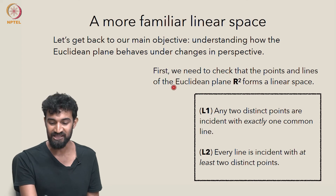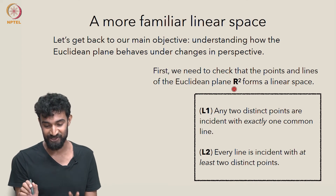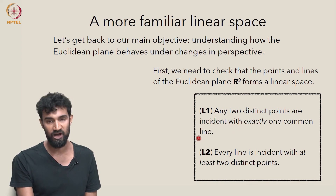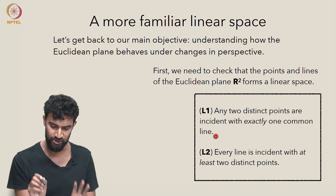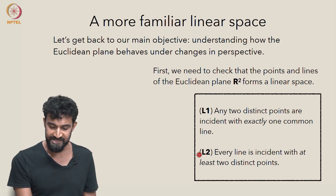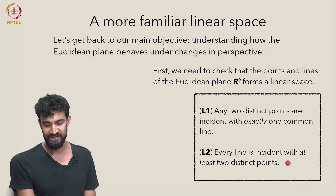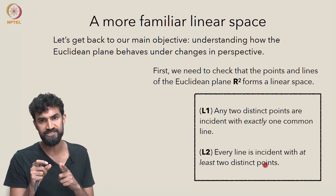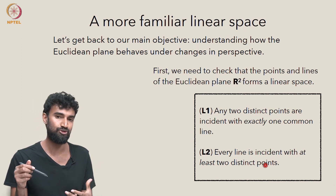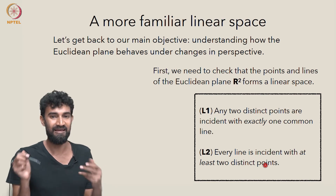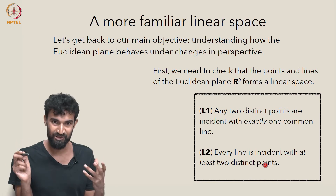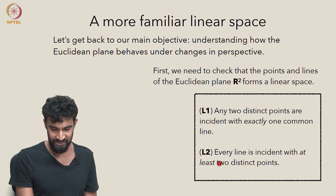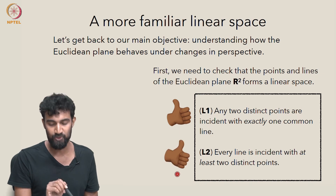Let's check that R2 forms a linear space. Any two distinct points are incident with exactly one common line — yes, that's true in R2. Any two points determine a line. Secondly, every line in R2 must be incident with at least two distinct points. In R2, does every line contain at least two points? Yes — every line contains infinitely many points, so in particular it contains two or more points. So both L1 and L2 are satisfied.